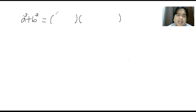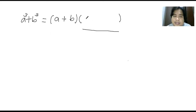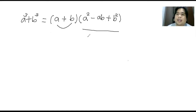Talking about the sum of two cubes, this is how it looks like. For the first factor, you just have to copy the bases. A cubed — the base of that is A. B cubed — the base of that is B. So just copy that and also copy the operation plus. For the second factor, you will have a trinomial, meaning three terms. The first term would be A squared — the square of the first term. The last term is B squared — the square of the second term. The operation is always plus. For the middle term, it is just the product of these two: A times B. And the operation is always minus.